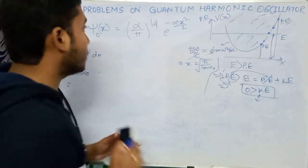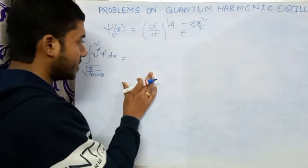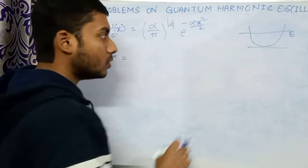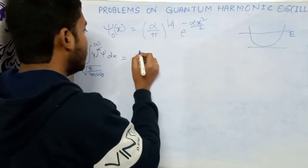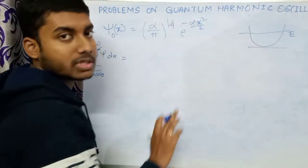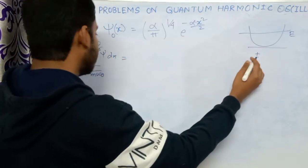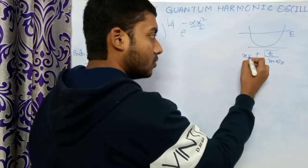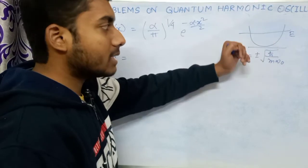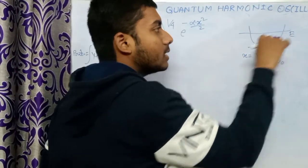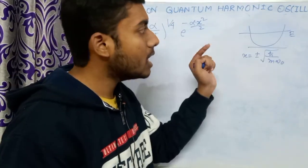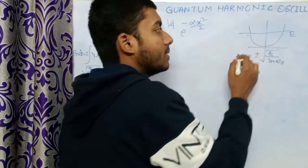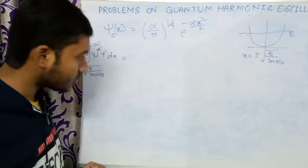Now when we set up the integral, we have to remember there must be a plus-minus sign before sqrt(h-bar / m omega). From the physical picture, one boundary is at positive sqrt(h-bar / m omega) and the other is at negative sqrt(h-bar / m omega), so x equals plus or minus sqrt(h-bar / m omega).